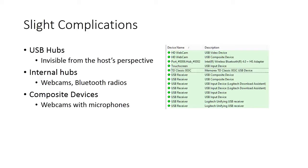Perhaps more worrying, the webcam and Bluetooth radio devices are both internal devices that are permanently embedded in the computer. While we might consider a webcam a single device, it may actually represent several different USB devices with different classes, such as audio and video.